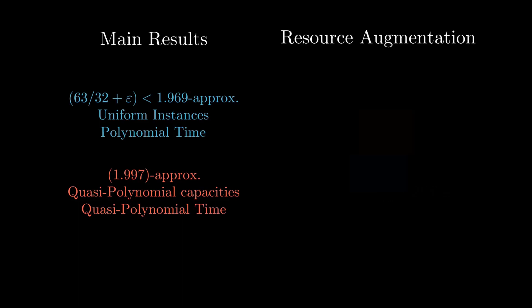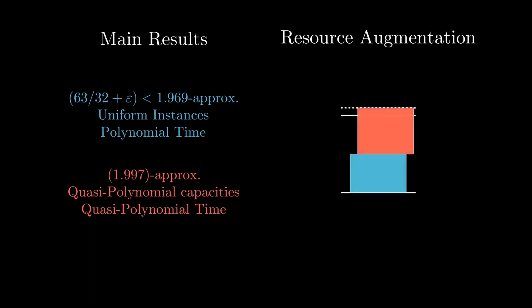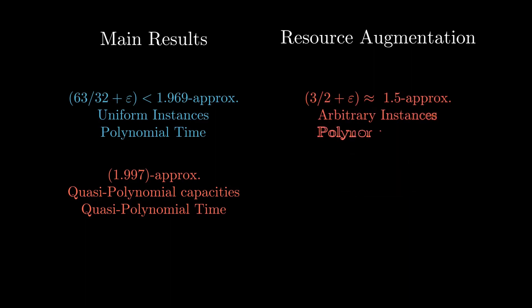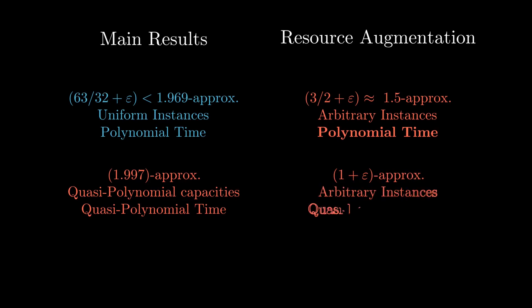The problem becomes easier if we allow resource augmentation. That means that we, as the algorithm, are allowed to use all the capacity up to the dashed line on top, but the optimal solution still has to stay underneath the real capacity profile — the solid line. If we allow resource augmentation, we are able to obtain a 3/2 plus epsilon approximation, roughly 1.5, in polynomial time. And if we allow quasi-polynomial running time, then we obtain a 1 plus epsilon approximation, which is the best that we can hope for.